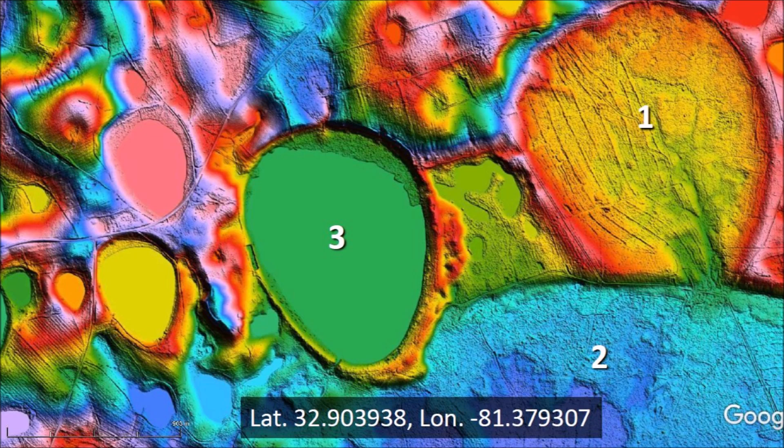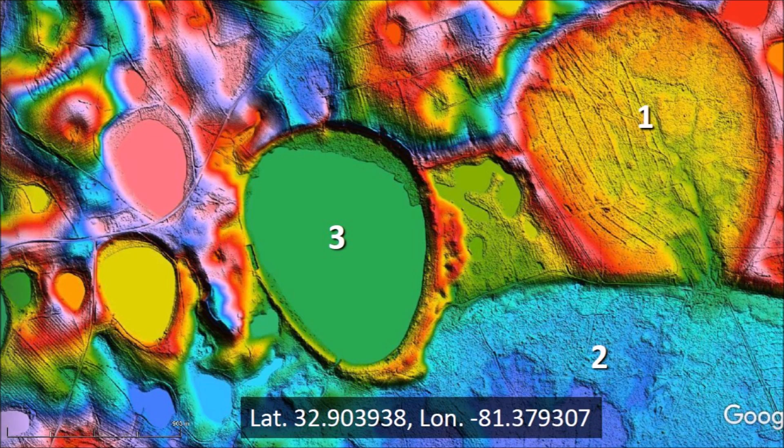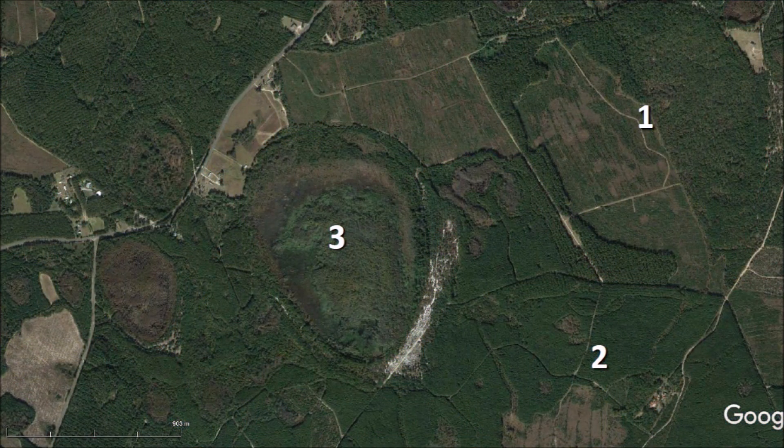Bay number 3, which was created after the first two, has a thick and sandy rim on its southeast side, typical of Carolina bays. A satellite image of the same area shows the bays as different shades of brownish vegetation, but the sandy rim of bay 3 is clearly visible.